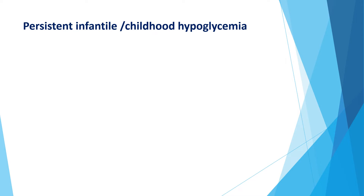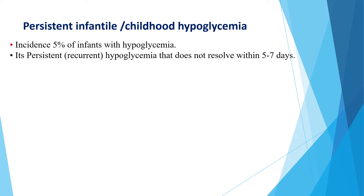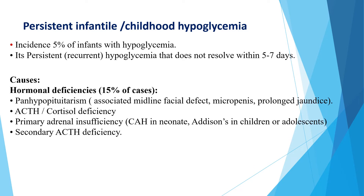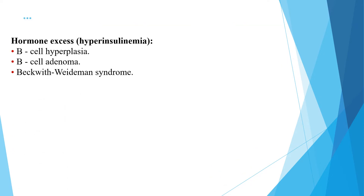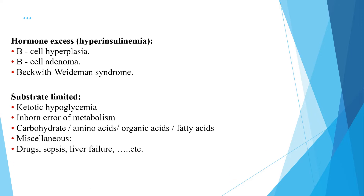Persistent infantile or childhood hypoglycemia accounts for around 5% of infants with hypoglycemia. It is persistent and recurrent hypoglycemia that does not resolve within 5 to 7 days. Causes include hormonal deficiencies such as pan-hypopituitarism, ACTH or cortisol deficiency, and primary adrenal insufficiency; hormonal excess or hyperinsulinism due to beta cell hyperplasia, beta cell adenoma, or syndromes like Beckwith-Wiedemann syndrome; substrate-limited causes such as ketotic hypoglycemia and inborn errors of metabolism affecting carbohydrates, amino acids, organic acids, and fatty acids; and miscellaneous causes such as drugs, sepsis, and liver failure.